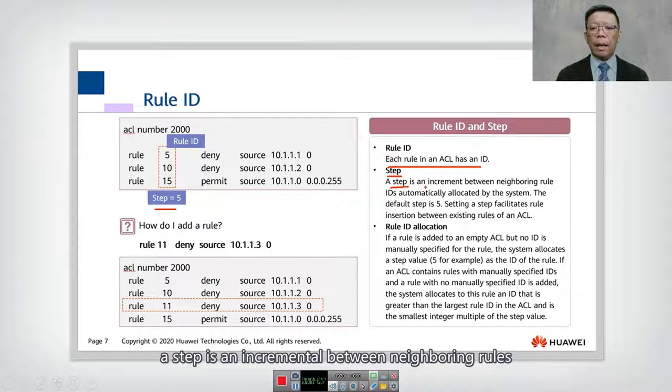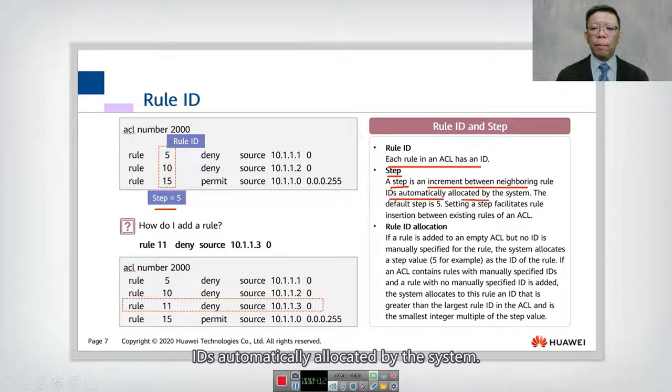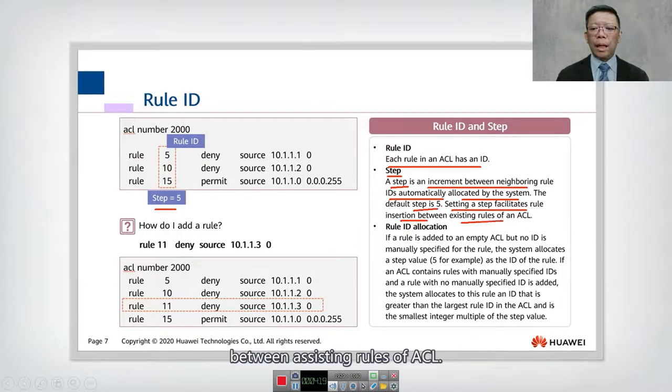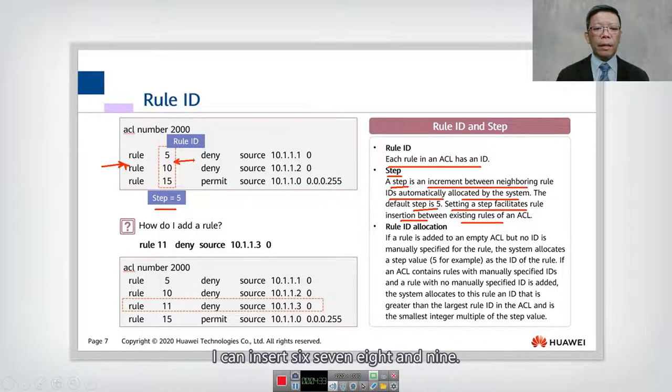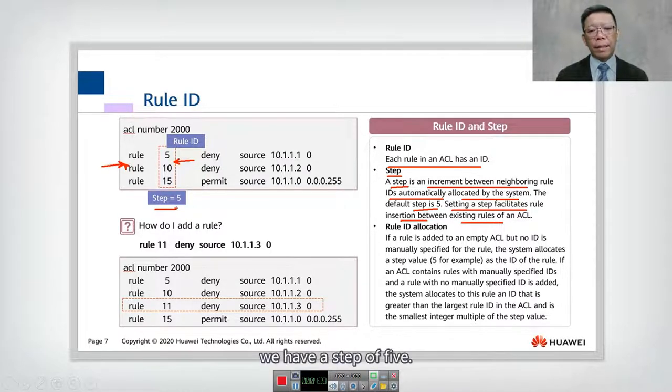A step is an incremental between neighboring rules. ID automatically are allocated by the system. The default step is 5. Setting a step facilitates rules insertion between assisting rules of ACL. What this means here is, if I have missed out some rules and I want to insert the rules in between, you can see that between 5 and 10, I can insert 6, 7, 8, and 9. So that is a reason we have a step of 5.